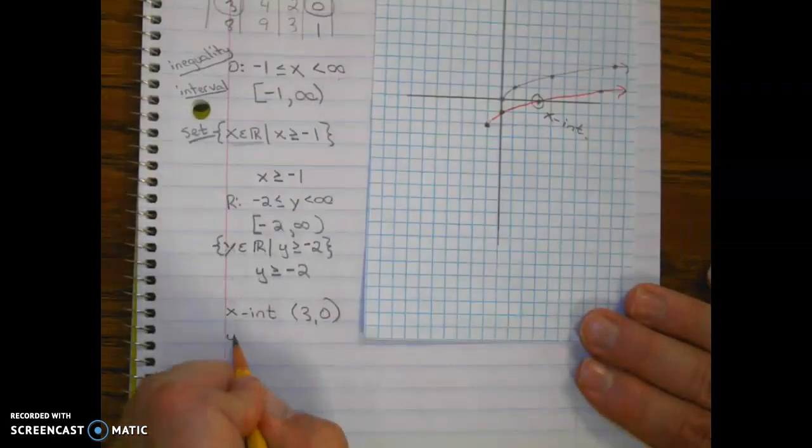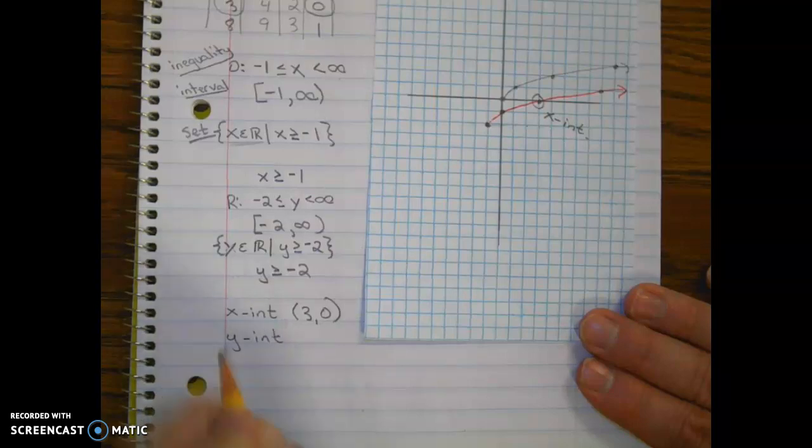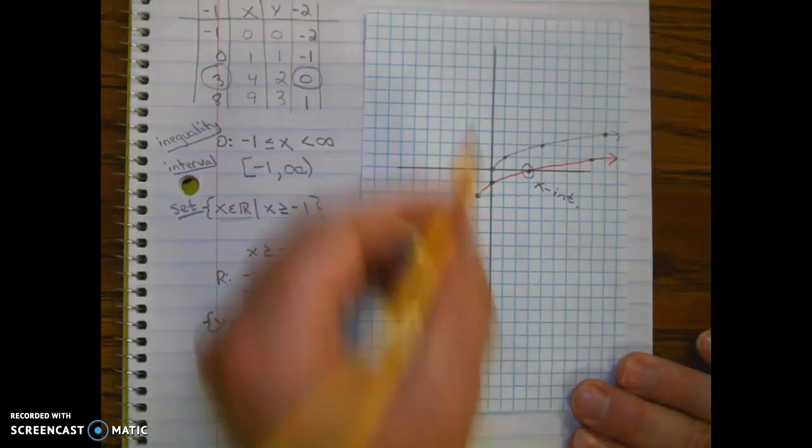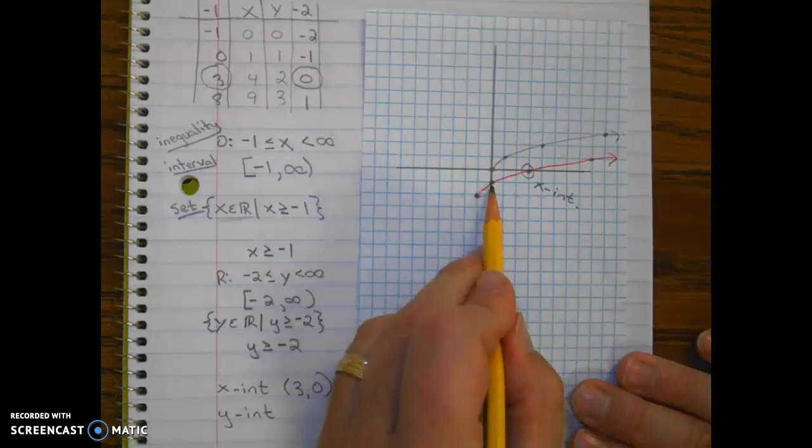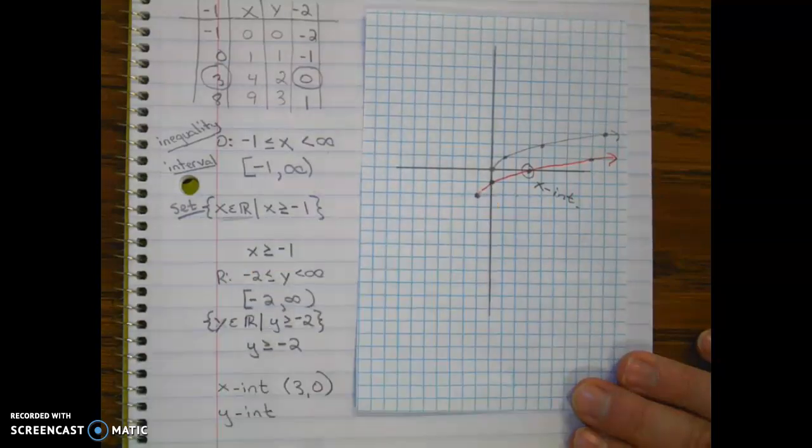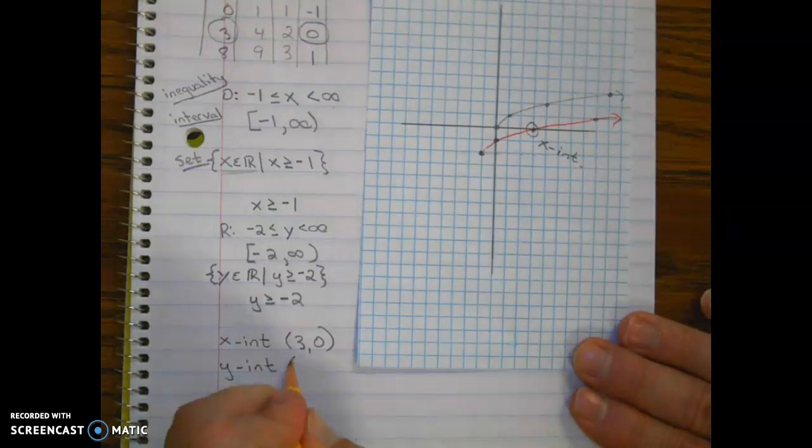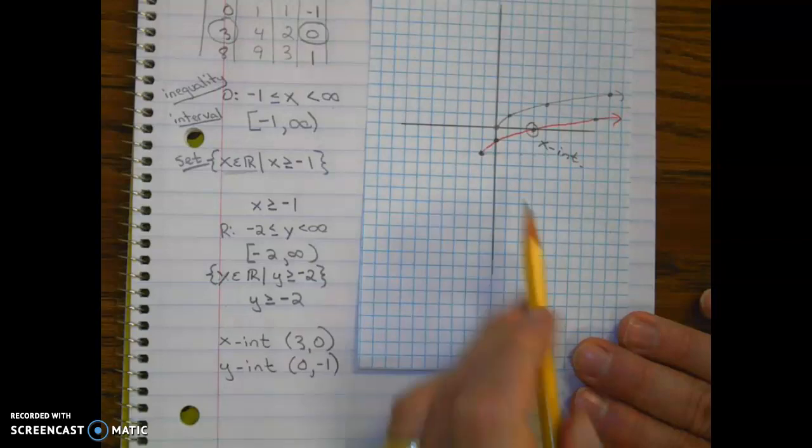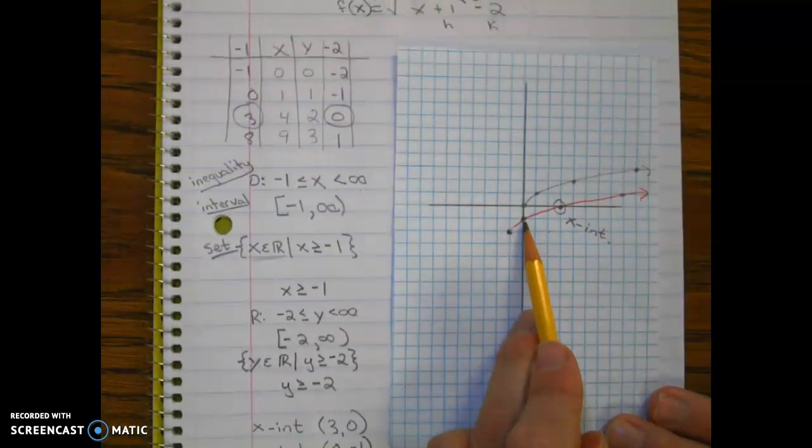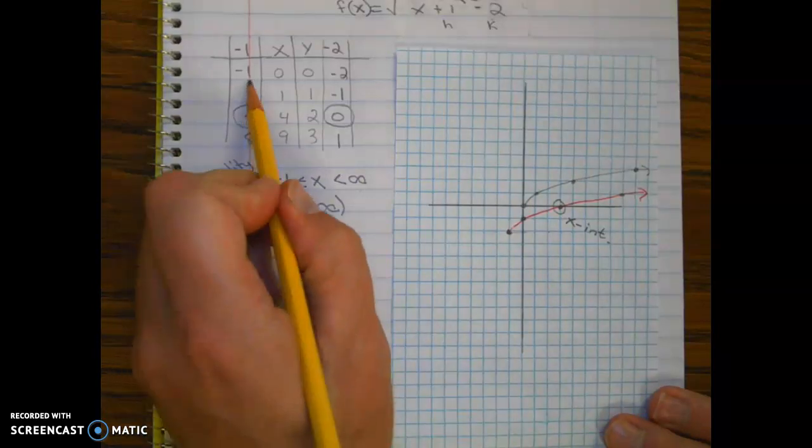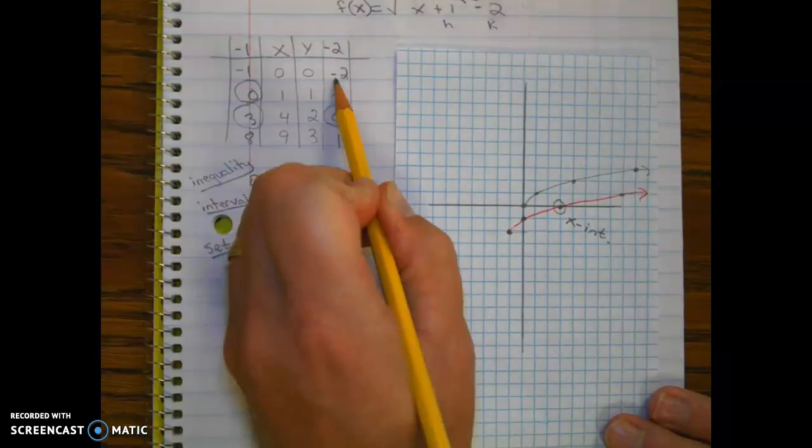Y intercepts, that's where it crosses the y-axis. And here it's going to cross the y-axis at zero negative one. Again, you can tell where it is right here on the graph, or you can look in the table and you can see the y intercept right here.